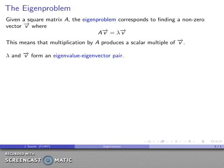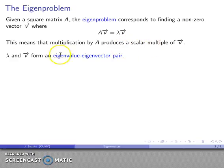The term we use here is that lambda and our vector v form an eigenvalue-eigenvector pair. Lambda is the scalar multiple, and v is the vector where the matrix product is some scalar multiple of that vector.